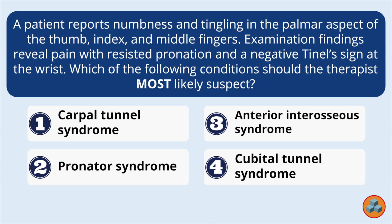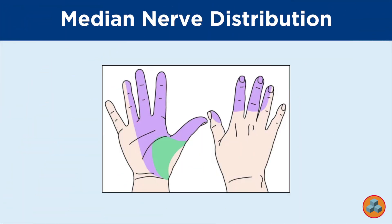The question offers three specific findings that can be used to determine the most likely clinical condition. Finding 1: Numbness and tingling in the palmar aspect of the thumb, index, and middle fingers. A student should recognize that this pattern of sensory disturbance is consistent with the median nerve distribution.